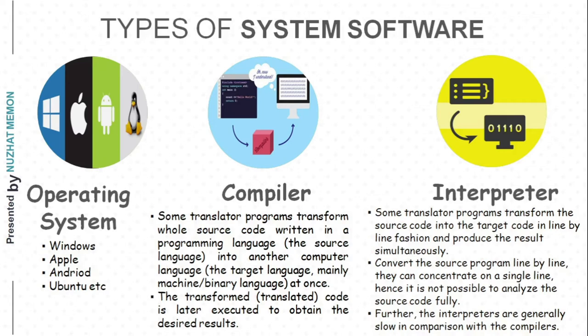The second type of system software is the compiler. Compiler programs transform whole source code written in a programming language — such as Java, C++, or C — into the target language, mainly machine or binary language. It converts the code into machine-readable format all at once. If there are errors in the code, it shows all the errors at the end so you can rectify them.